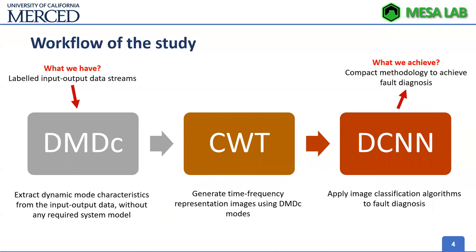Our workflow starts with labeled input-output data streams — specifically the famous ball bearing dataset from the literature. Using dynamic mode decomposition with control (DMDc), we extract dynamic mode characteristics from the input-output data without any requirement of a system model or underlying physics. We then generate time-frequency representation images using DMDc modes, and apply deep convolutional neural networks for image classification for fault diagnosis, achieving a compact methodology.